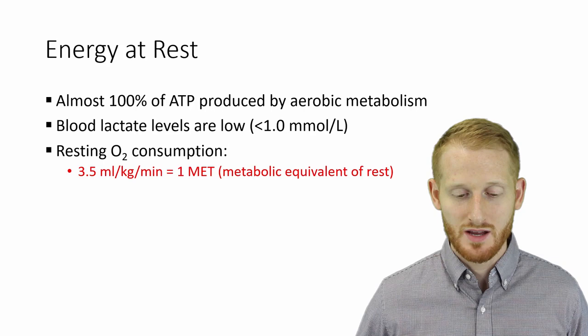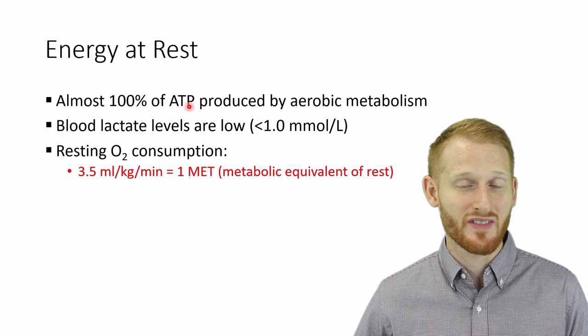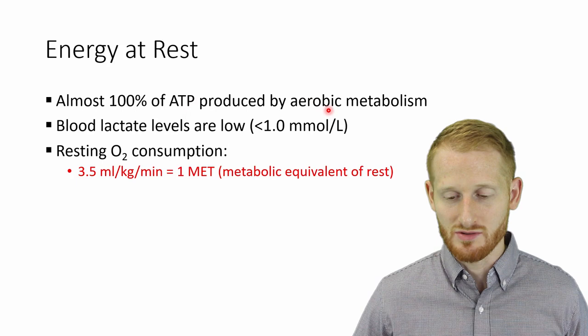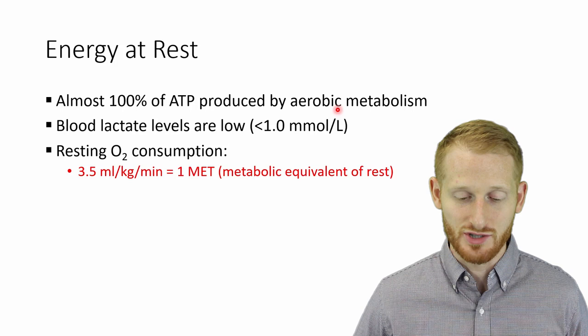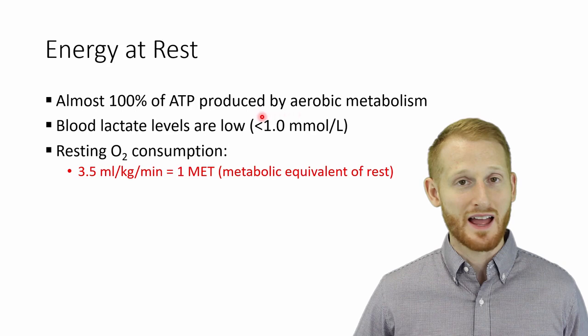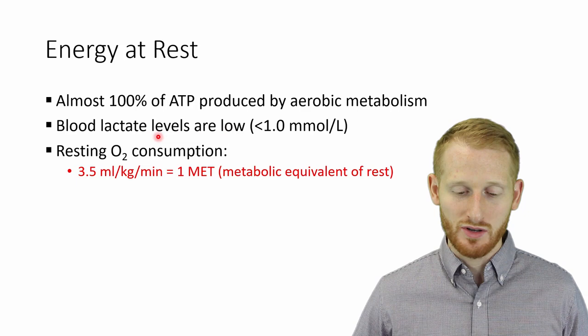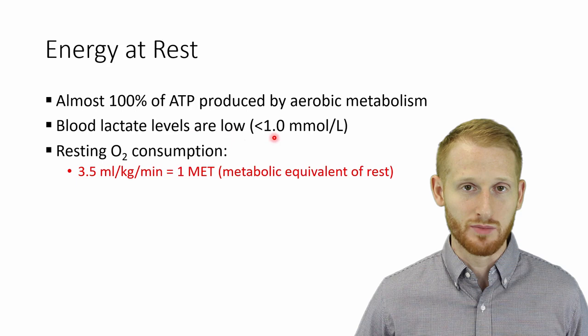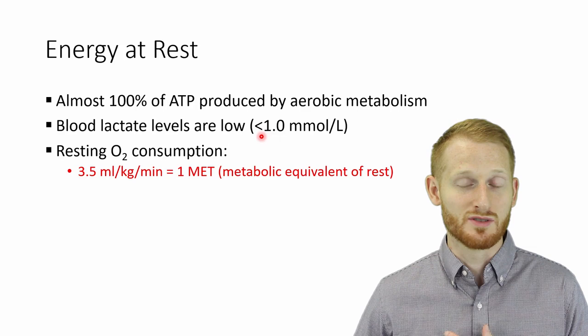When we are resting, almost 100% of our ATP — adenosine triphosphate, the smallest unit of energy the body uses — is being produced aerobically, which means we're not using a lot of anaerobic metabolism to make our energy. It doesn't mean we're not doing any anaerobic metabolism. When you look at blood lactate levels at rest, which is produced only from glycolysis — an anaerobic pathway — we do have a little bit of blood lactate. Typically, though, it's less than one millimole per liter of blood. So most of our energy is being produced aerobically, which means it's using oxygen to make that energy.